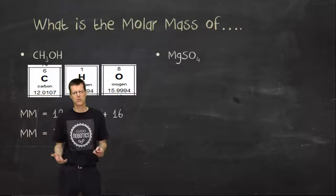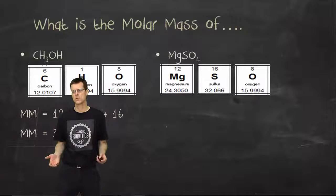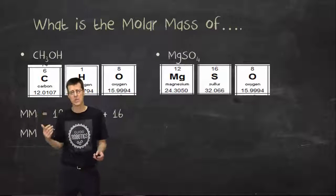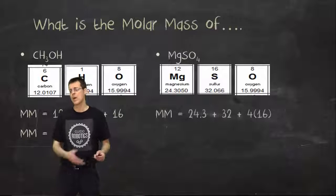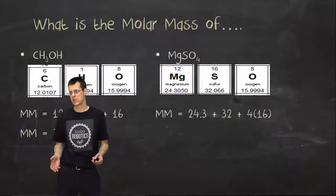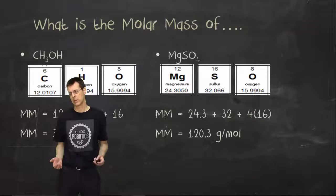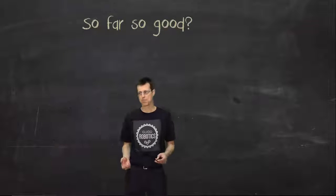What about MgSO₄? Again, we probably don't have the nomenclature for that, but you'd do the same thing. Add them all up, using the numbers on the periodic table, and you get 120.3 grams per mole.